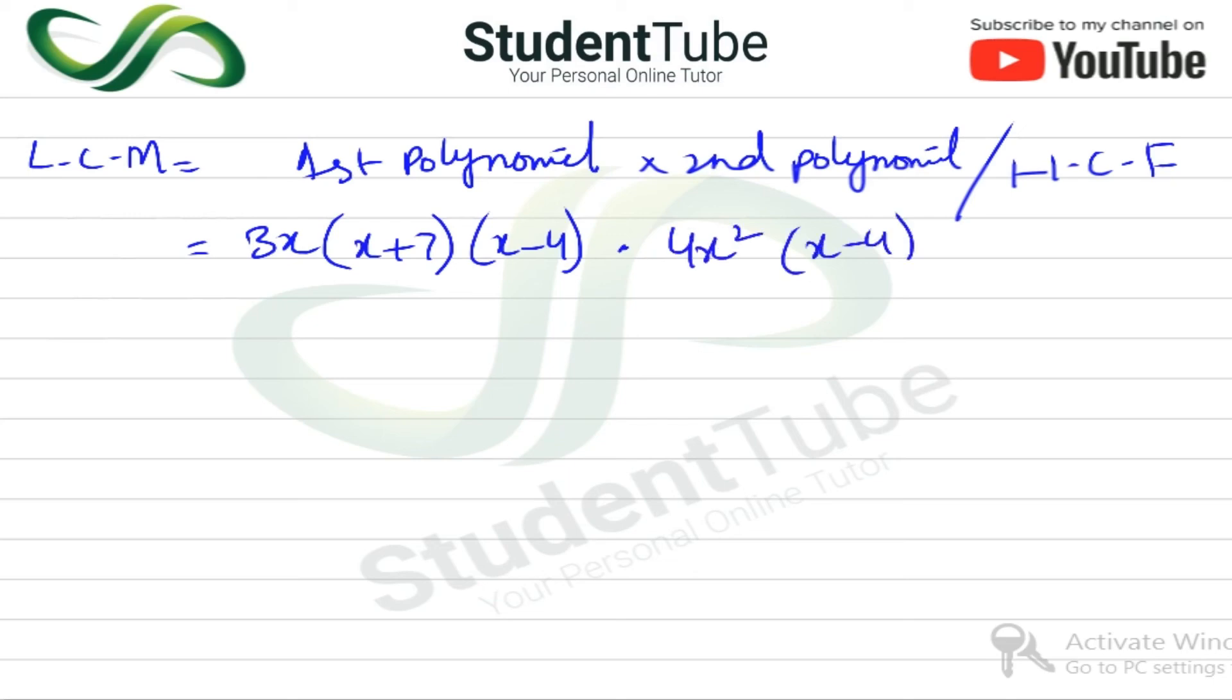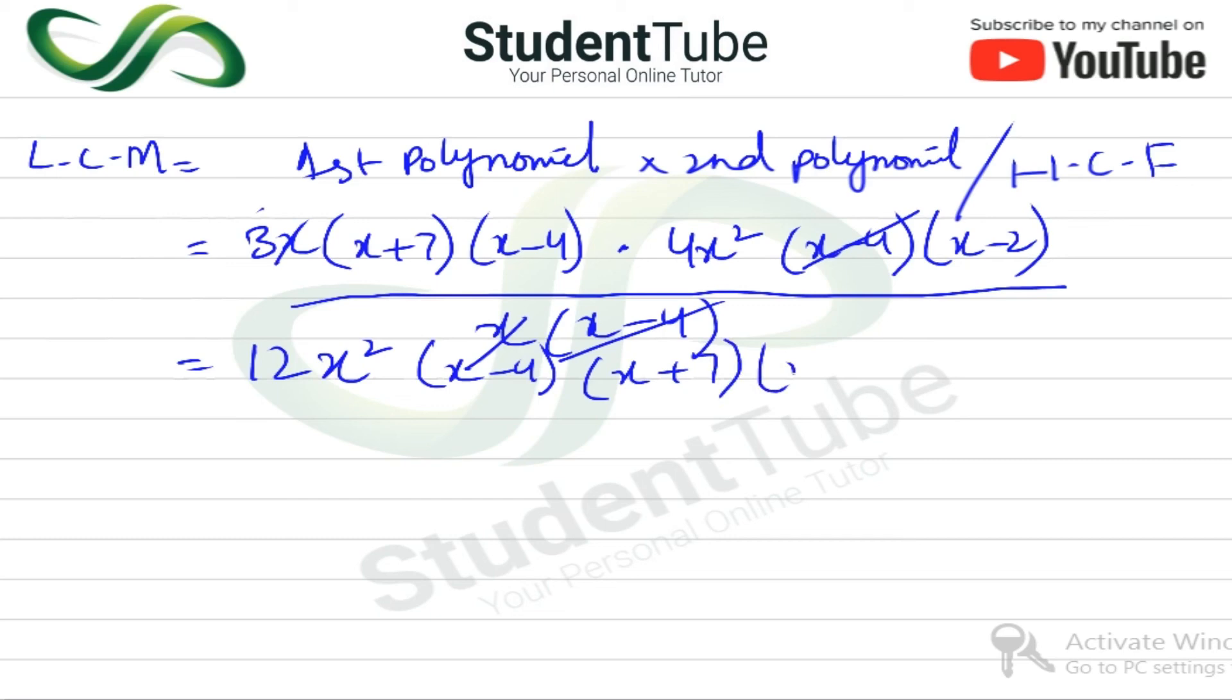and (x + 7) and (x - 4). Then multiply by 4x², then (x - 4) and (x - 2). And this will be divided by HCF, that is x and (x - 4). So this (x - 4) cancels with this, and this x cancels with this x. So this 3 when multiplied with 4 gives us 12x². And along with this, the rest will come as they are, that is (x - 4)(x + 7)(x - 2). Answer.